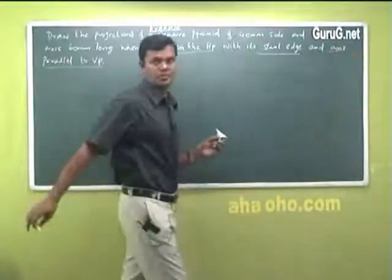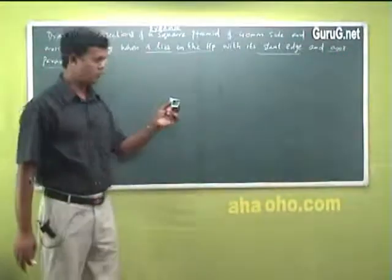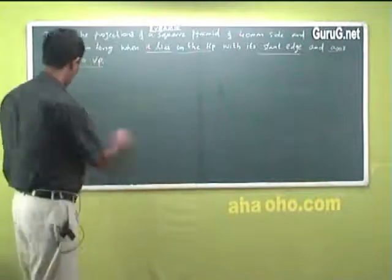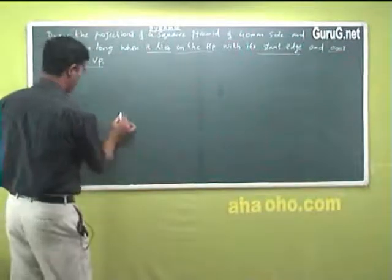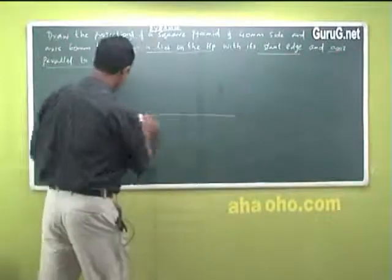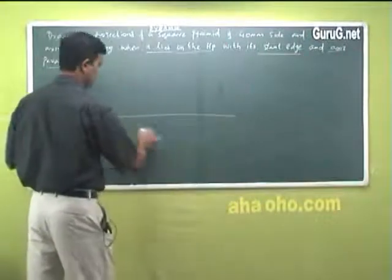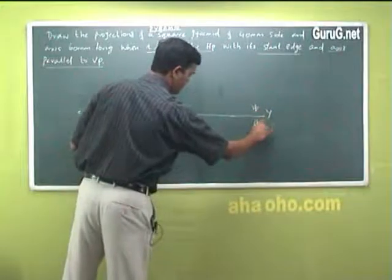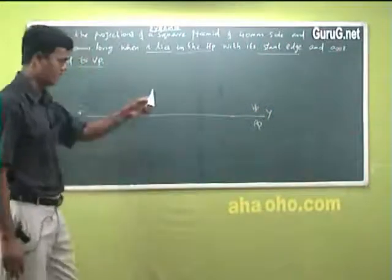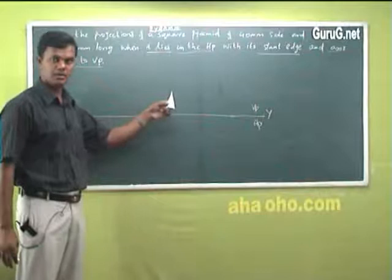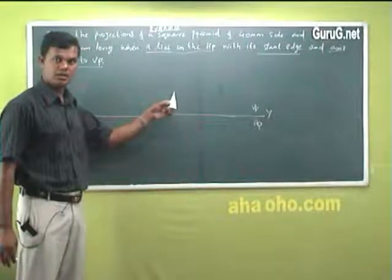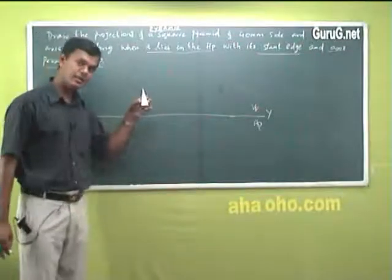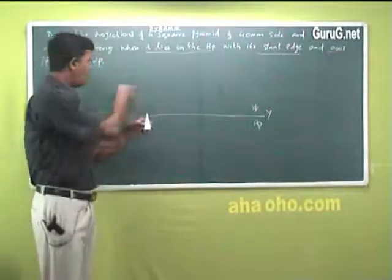Finally, it is parallel to VP. Now how do you make it parallel? I draw simply an XY line — write VP and HP. The axis is made parallel to the XY line. That is the correct condition.